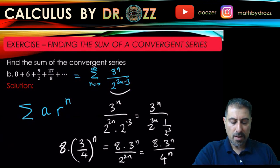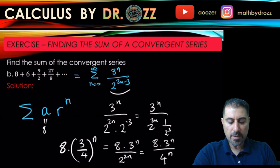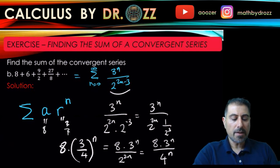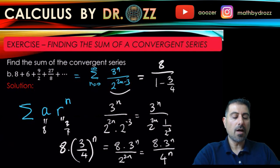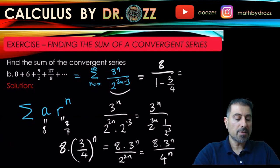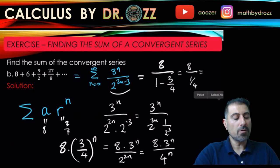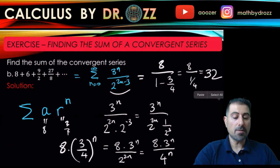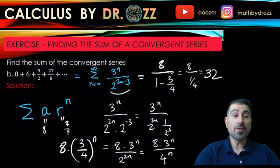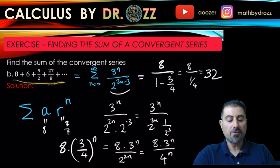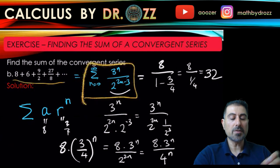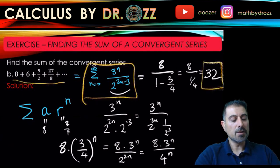So we have a = 8 and r = 3/4. Since |r| = 3/4 < 1, the series converges. Applying the geometric series formula: Sum = a/(1-r) = 8/(1 - 3/4) = 8/(1/4) = 8 · 4 = 32. Therefore the sum of the given numbers, following this infinite pattern, equals 32.